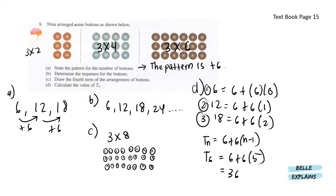Next, Nina arranged some buttons as shown below. State the pattern for the number of buttons. So here we have 6, 12 and 18. In between these numbers there's a plus 6. 6 plus 6 gives us 12, 12 plus 6 gives us 18. So the pattern here is plus 6.